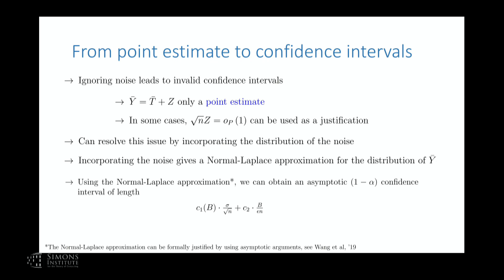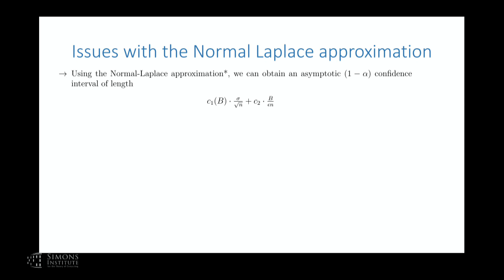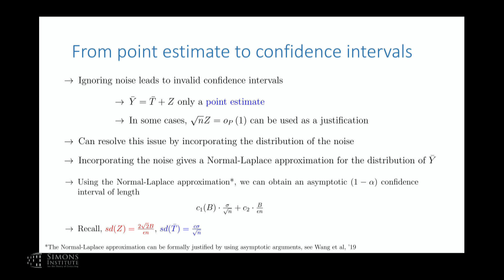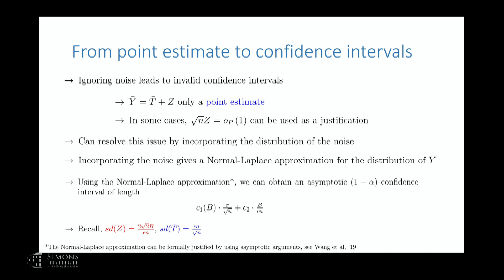If you incorporate the distribution of the noise, you get a confidence interval with length roughly C(B)*sigma/sqrt(n) plus a constant times B/(epsilon*n). This is the length you get from the normal-Laplace approximation. But there are still issues. First, there's a constant term that's a function of the bound B. This is caused by the truncation, and B is typically chosen without looking at the data — which is something we faced at Harvard for the CRCS group. People didn't know the variables they were looking at, so they had to choose bounds without ever seeing the data, and the bound can be wildly off.